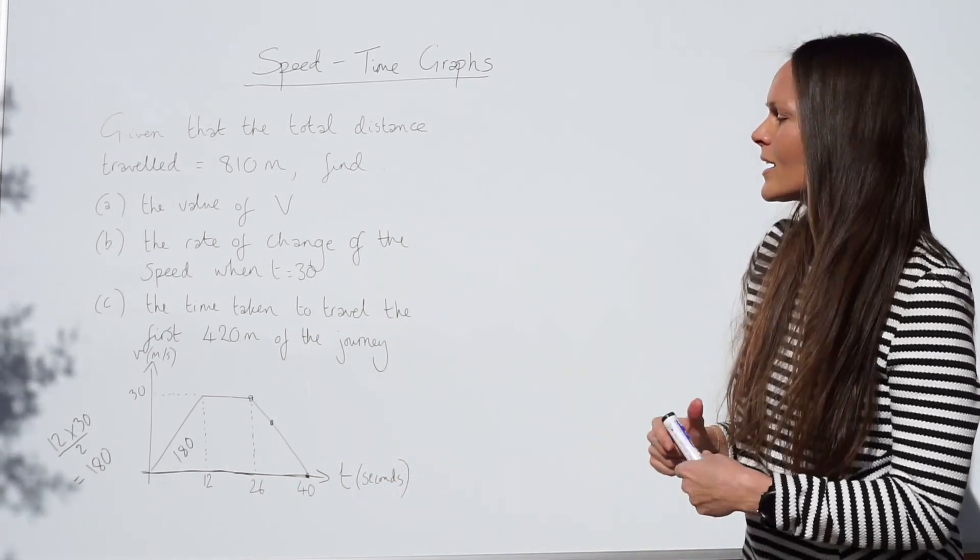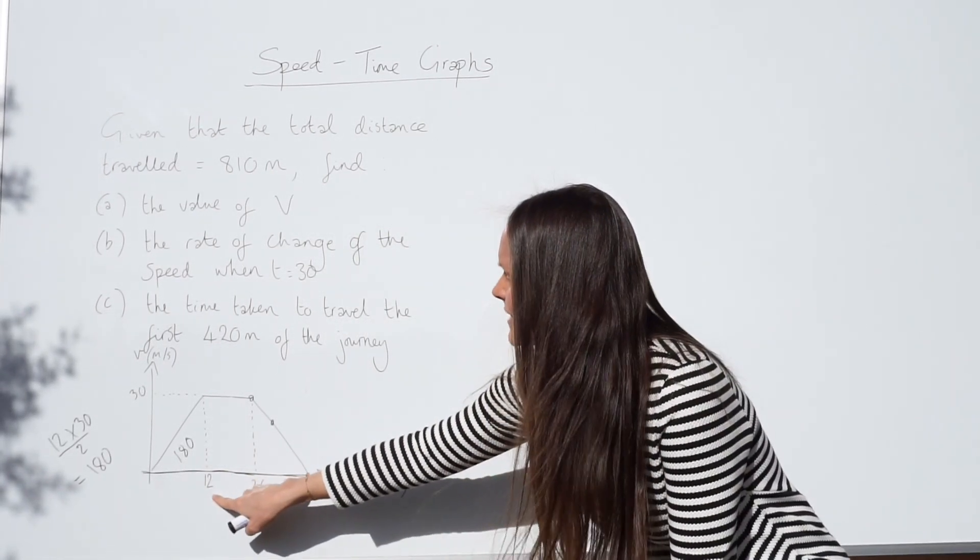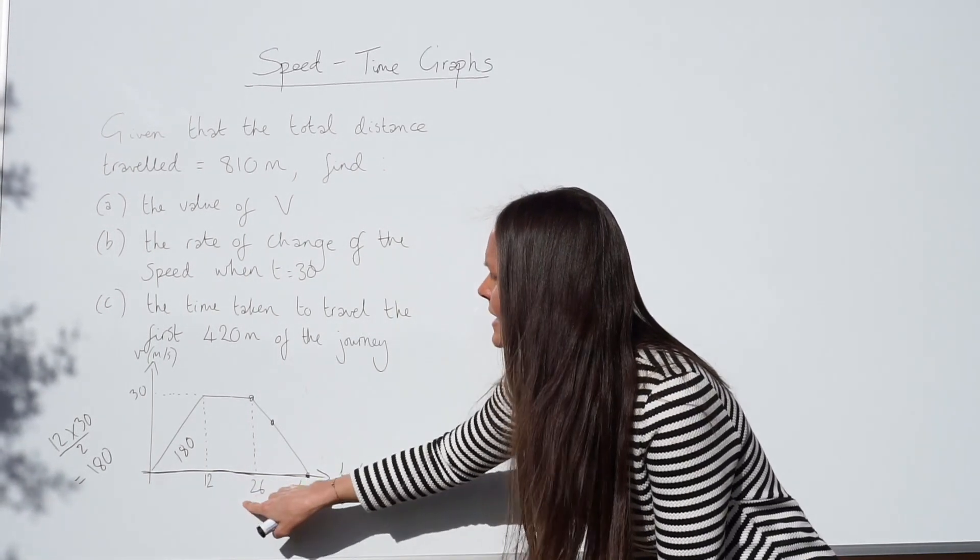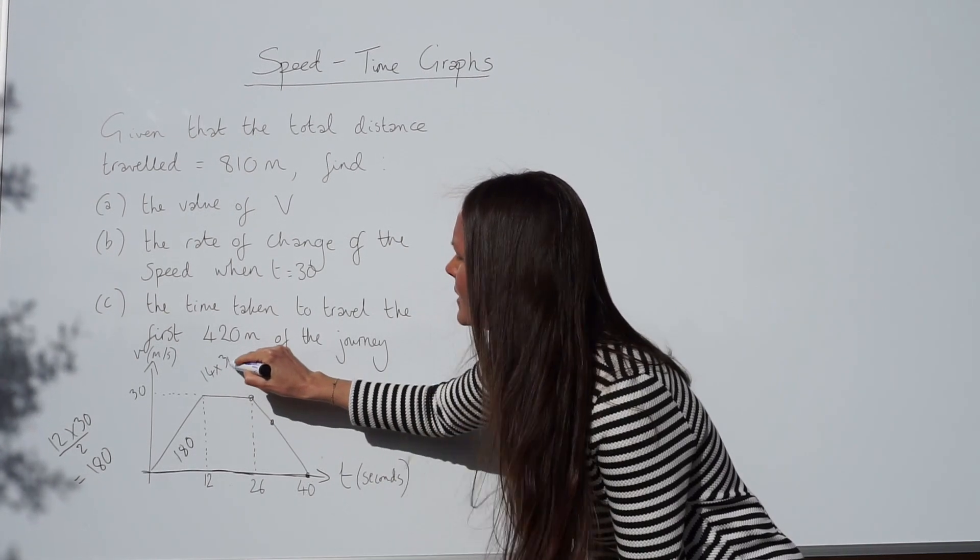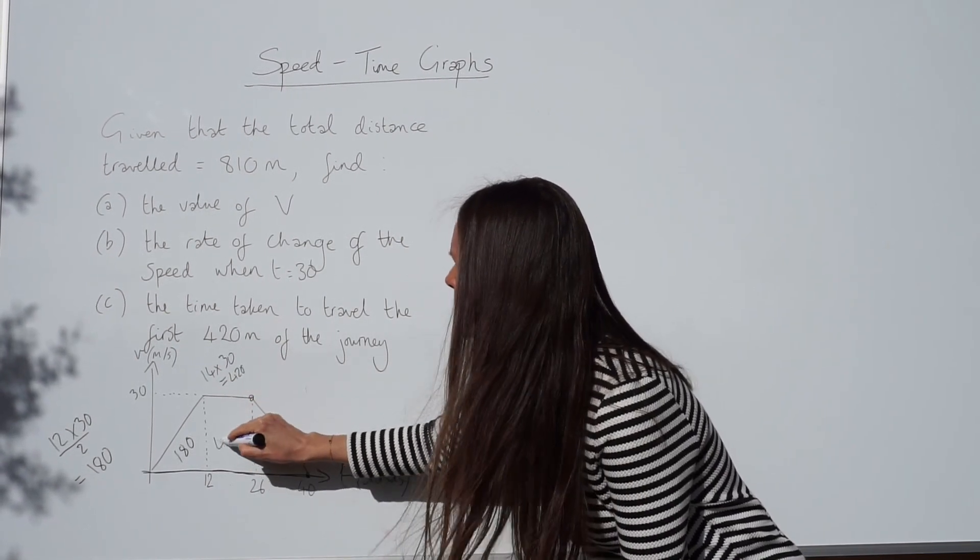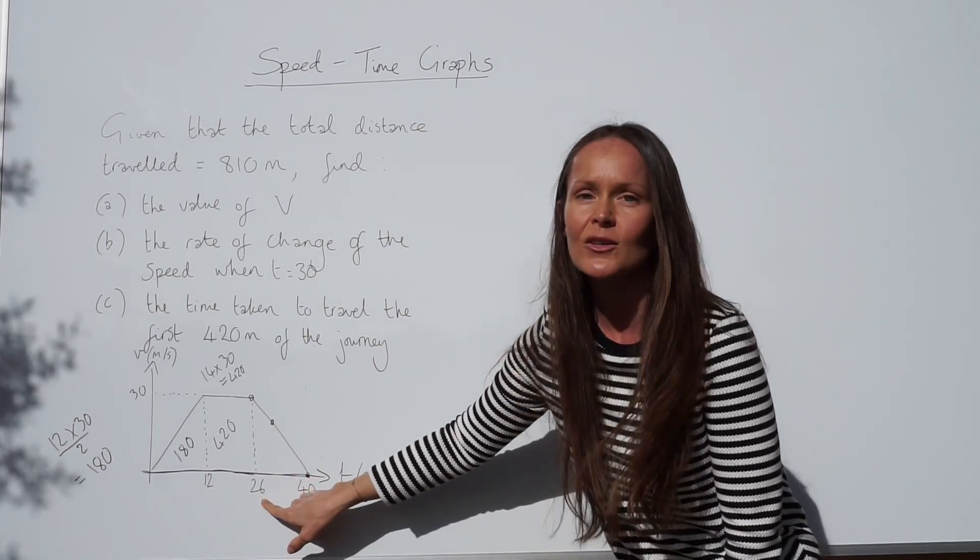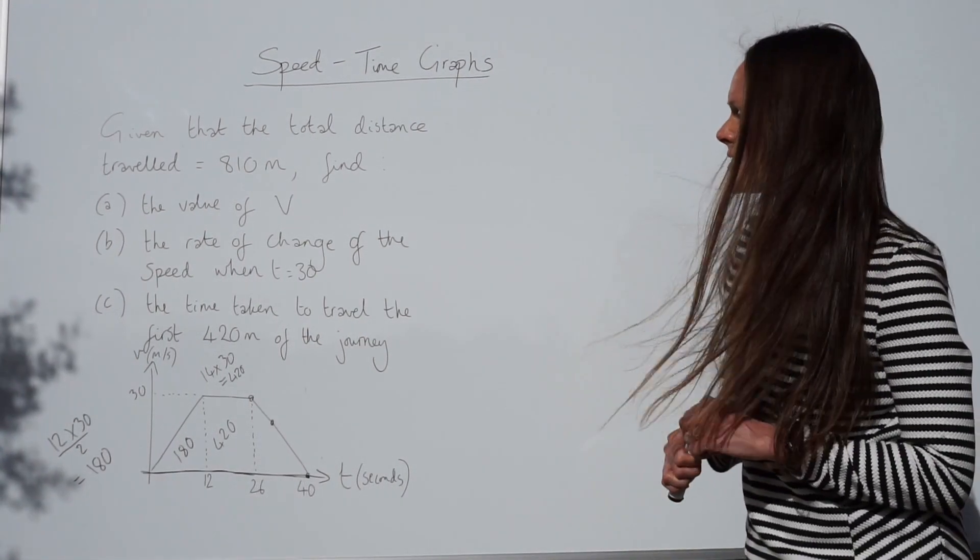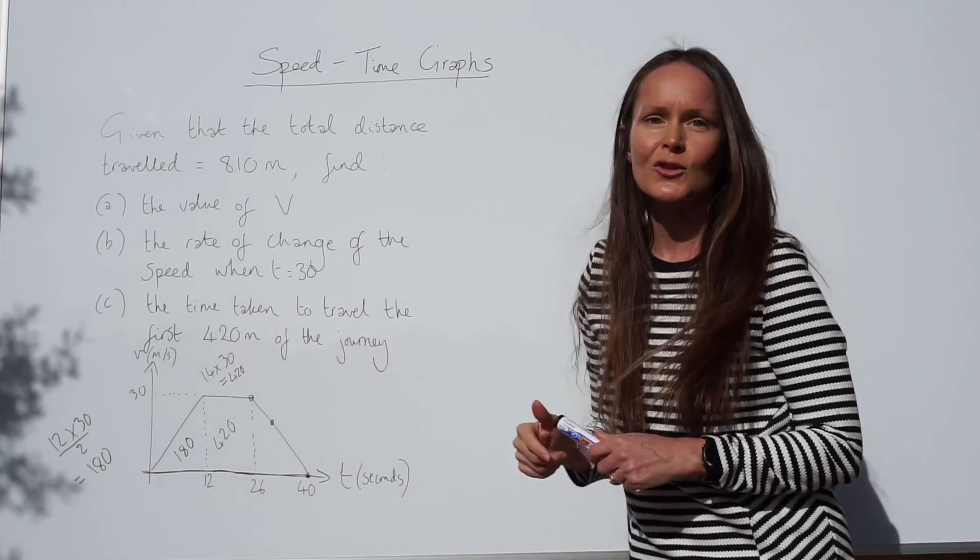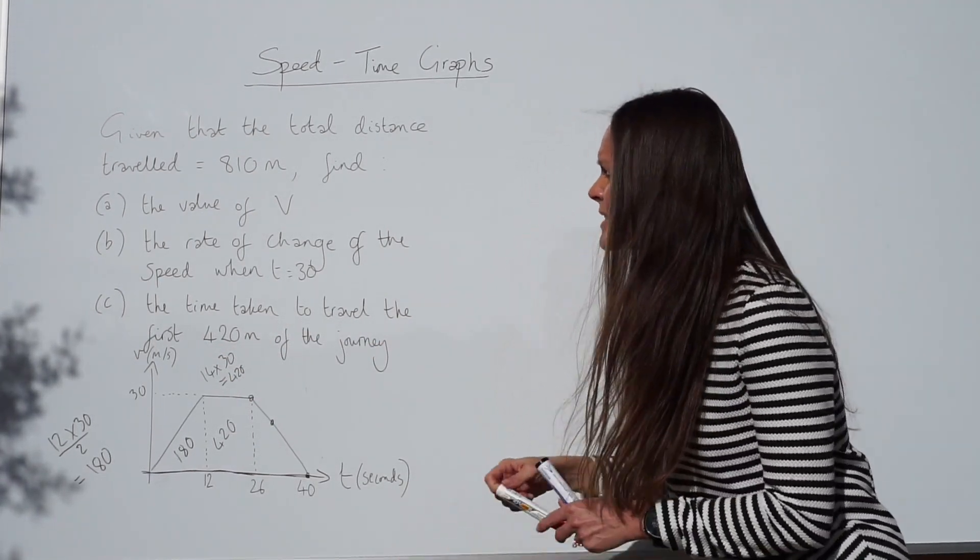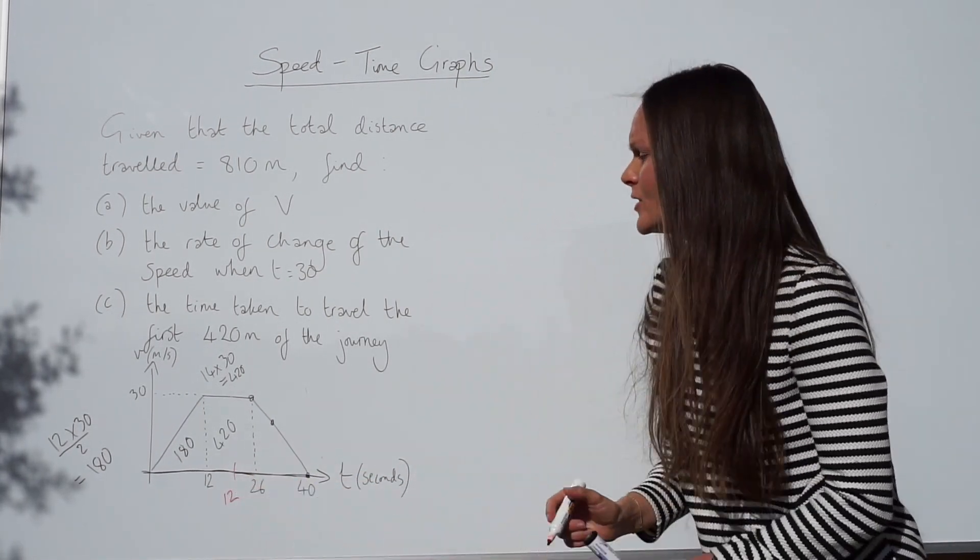So I'm going to work out next the area of the rectangle. To work out the area of a rectangle, you multiply the base by the height. This base is 14, because 26 take away 12 is 14. And again, the height is 30. So 14 multiplied by 30 is 420. So we know between 12 seconds and 26 seconds, we travel 420 metres. So if I add those together, it's greater than 420 metres, which means the time taken that we're looking for is somewhere between 12 and 26.